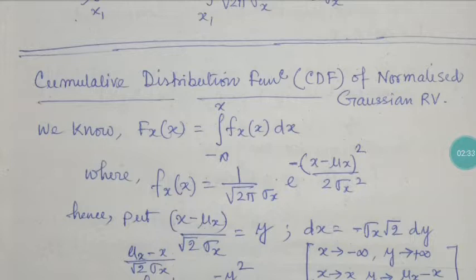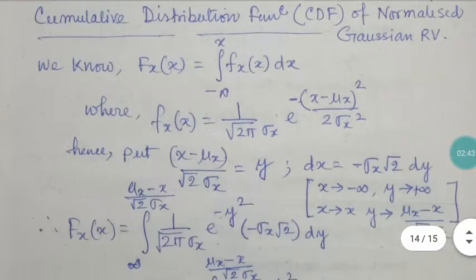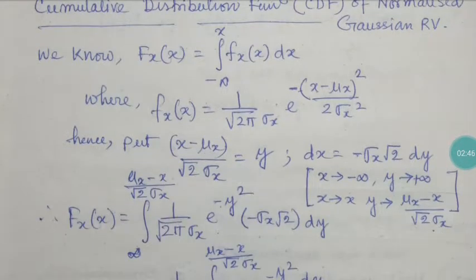To evaluate this integral, we substitute y = (x - μ_x) / (√2 σ_x). Taking the derivative on both sides gives dx = √2 σ_x dy. When x tends to infinity, y tends to infinity; when x tends to x, y tends to (μ_x - x) / (√2 σ_x). Substituting this into the main integration replaces x with the y variable.